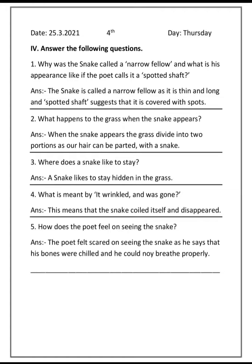4th main — answer the following questions. 1st one: Why was the snake called a narrow fellow, and what is his appearance like if the poet calls it a spotted shaft?